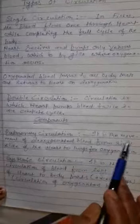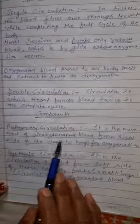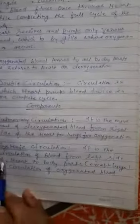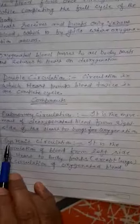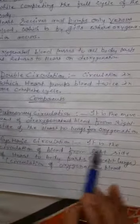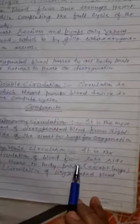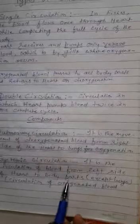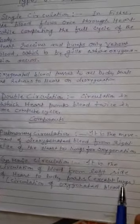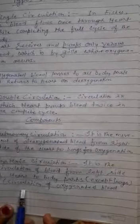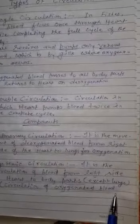Pulmonary circulation is the movement or the flow of deoxygenated blood from right side of the heart to lungs for oxygenation. Second type of circulation is the systemic circulation. It is the circulation of blood from left side of heart to all body parts except lungs. Such a circulation is the circulation of oxygenated blood.